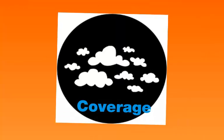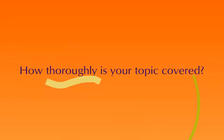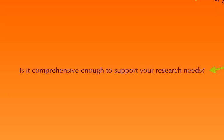Coverage. In addition to being objective or biased, you need to look at what kind of coverage does this source give to your topic. How thoroughly is your topic covered? Is it just skimming over it — a very superficial overview that's not really going to give you what you want? Is it comprehensive enough to support your research needs? Some of these criteria are about the quality of the source, and some are about whether it's applicable to your research.